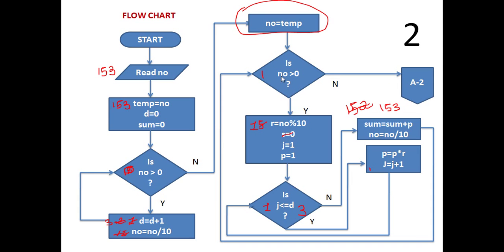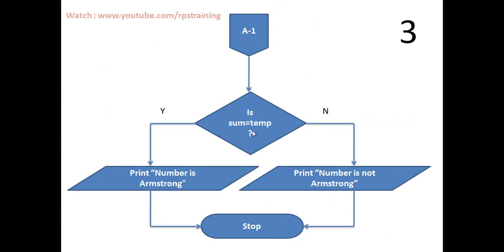Here we will check the equality of sum and temp. Sum is 153 and temp is also 153. Both values are the same, so the yes part will be executed and this message will be displayed: the number is Armstrong. Execution will be stopped here.